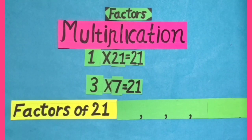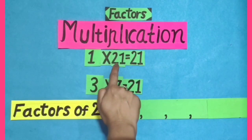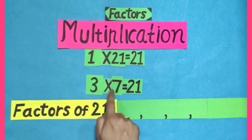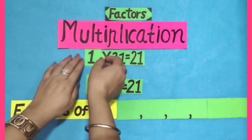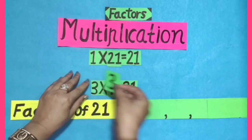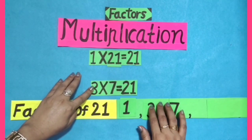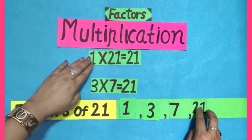Let's do factors of 21 by multiplication method. 1 multiplied by 21, we get the answer 21. 3 into 7 equals 21. So factors of 21 are 1, 3, 7, and 21.